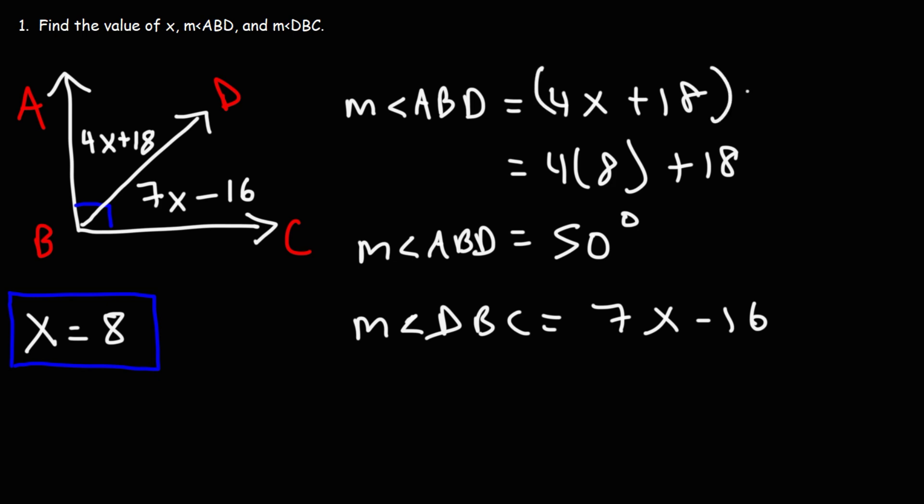This is 7X minus 16. Now technically, this value should be in degrees, so we can put a degree symbol here. Now we know that X is 8. 7 times 8 is 56.